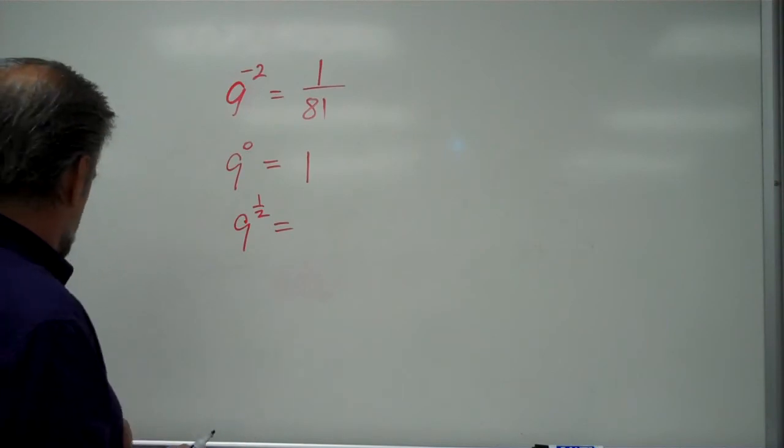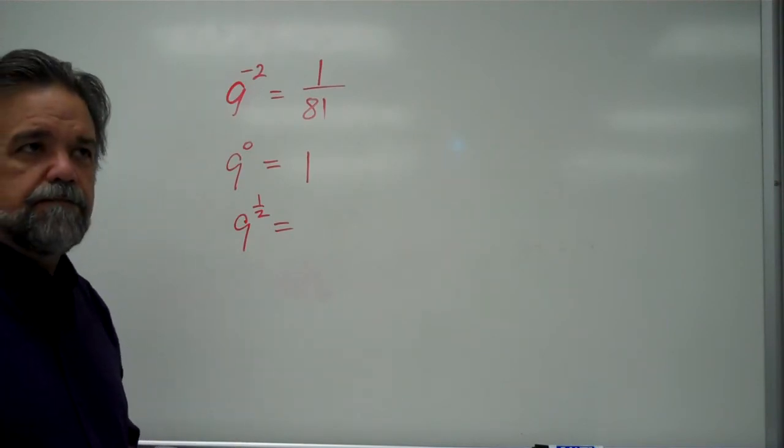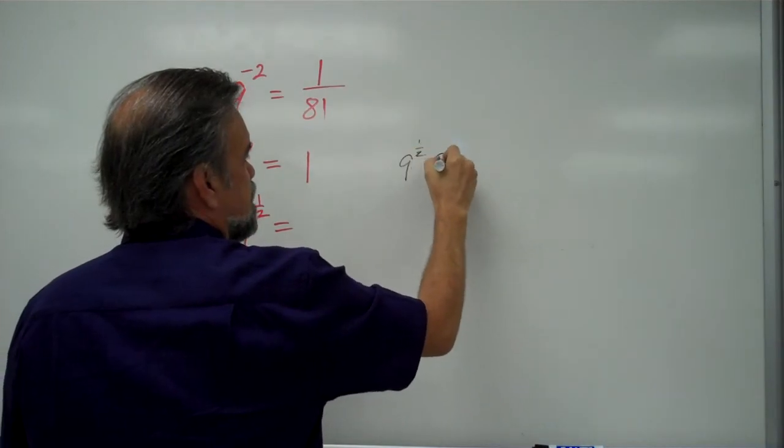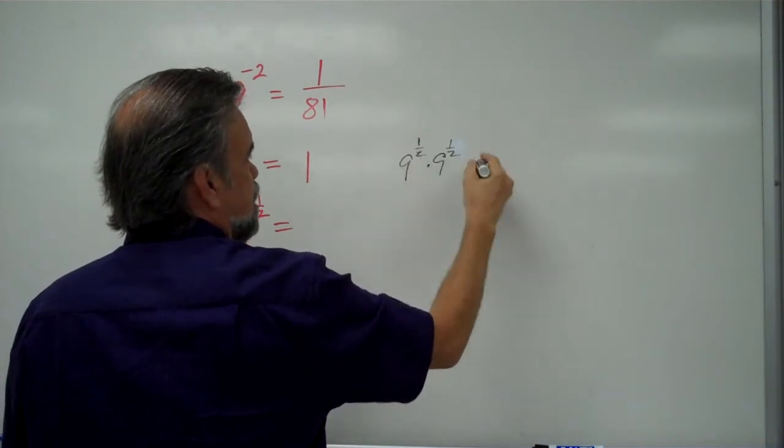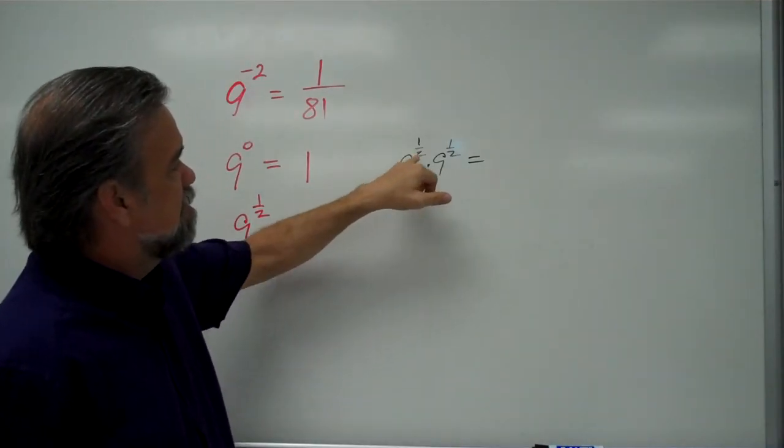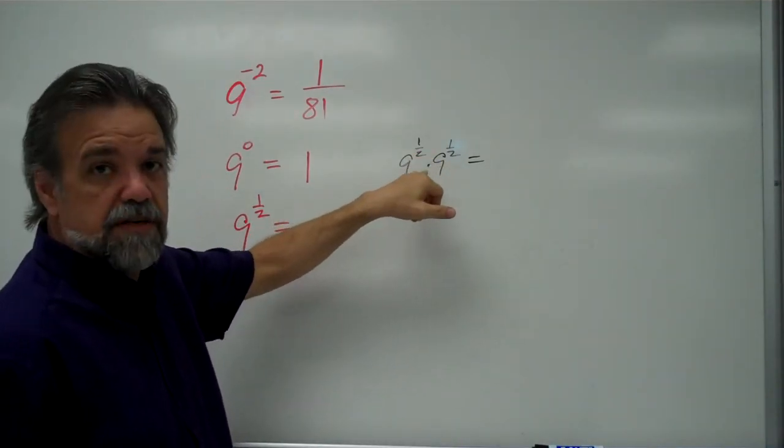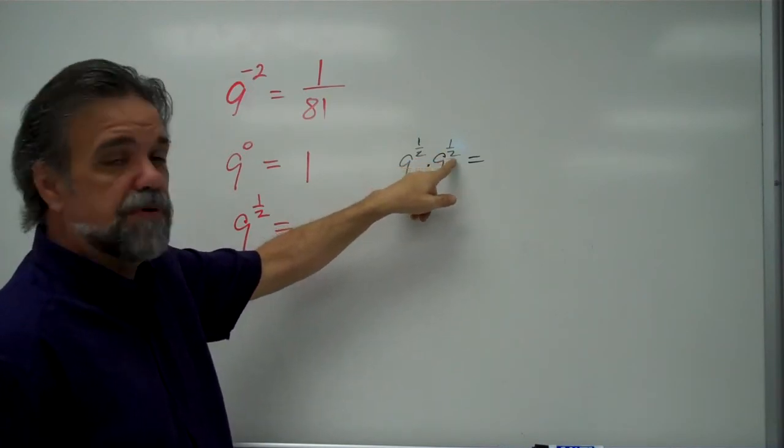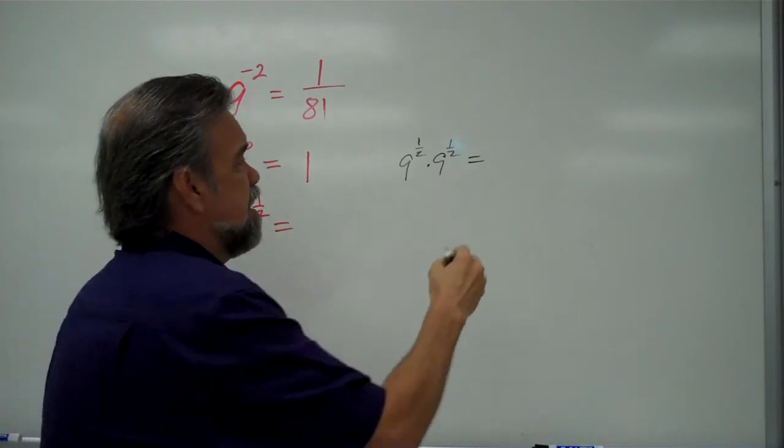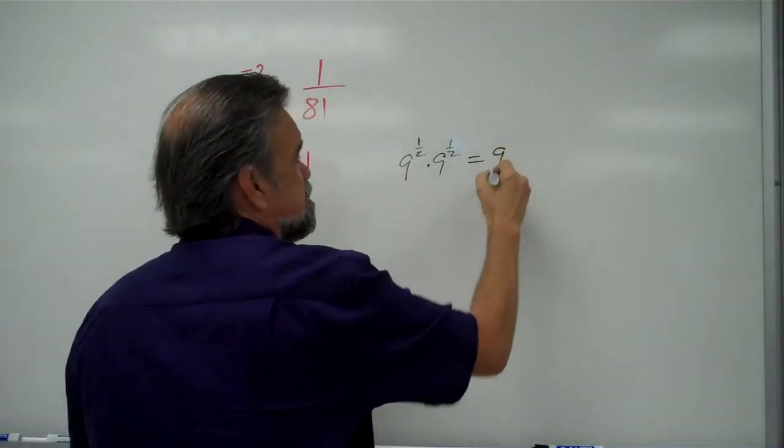Well, let's think about our rules. Let's think about what if we took 9 to the 1 half times 9 to the 1 half. And we multiply those together. I have the same base, and so if I have the same base and I'm multiplying, that means I'm just going to add those exponents, and 1 half plus 1 half is 1. So that would give me 9 to the 1 power, which is just 9.